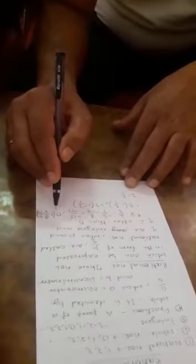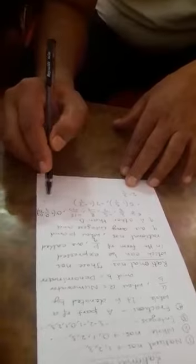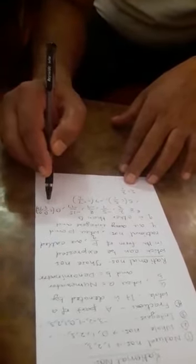Remember, 0 is also a rational number because 0 is equal to 0 divided by any number. 0 by 5, 0 by 10, so 0 is also a rational number.